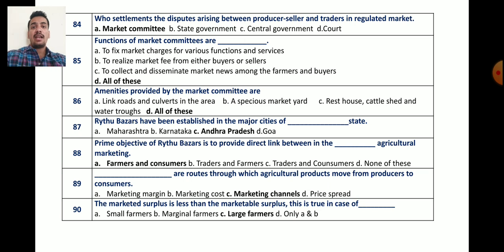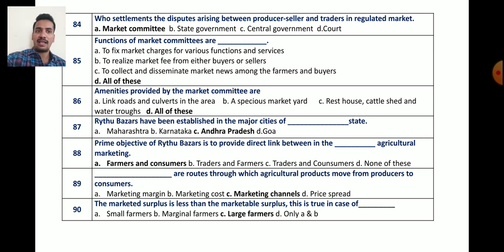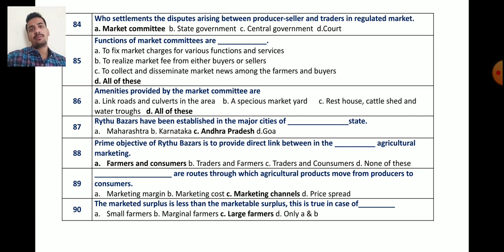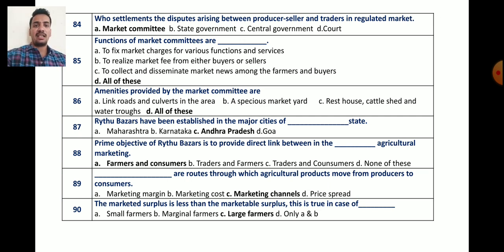Question number 86: amenities provided by the market committee include link roads, culverts in the area, a spacious market yard, rest house, cattle shed, and water troughs — all of these. The correct answer is all of these; all these are the amenities or facilities provided by the market committee in the market area.